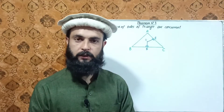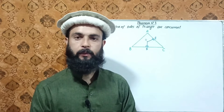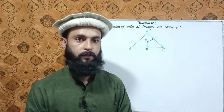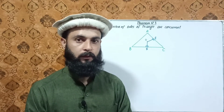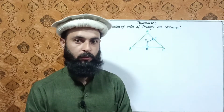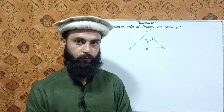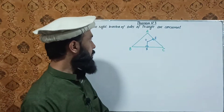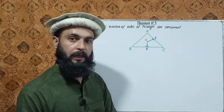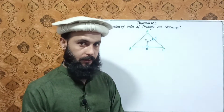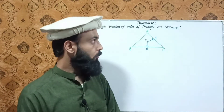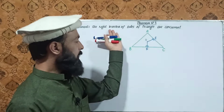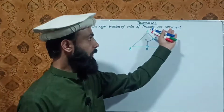Bismillahirrahmanirrahim. Class 9 Mathematics, Chapter number 12, theorem number — the lecture begins. The theorem statement: the right bisectors of the sides of a triangle are concurrent. With a triangle, the right bisectors of the sides are concurrent.